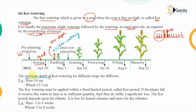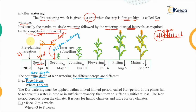The optimum depth of kor watering, also known as the kor depth, is different for different crops. For the rice crop, this value is 19 cm, while for the wheat crop it is 13.5 cm. From the point of time when the seed is sown to the point when the kor watering is applied, this duration is known as the kor period.